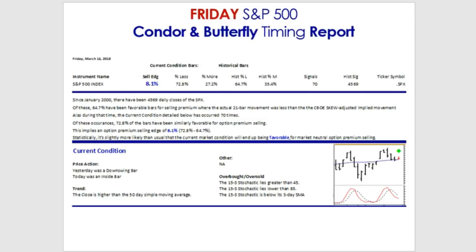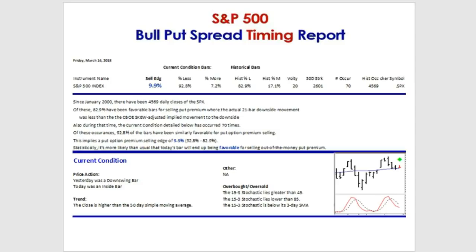It's not a guarantee you'll make money, but based on past occurrences of this condition, it's more likely than normal that the market will be less active than what is implied by the option prices. For those who like to lean bullish — maybe lean your condors or butterflies bullish, or sell put premium a standard deviation away, 30 days out — that's what's addressed in the bull put spread timing report, and we can see a pretty good selling edge here.